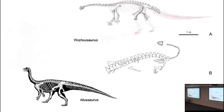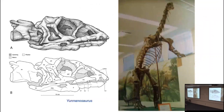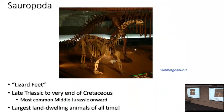Other near-sauropods include Mussaurus — I showed some of the growth cycle earlier — Inyosaurus, and Yunnanosaurus from China. Out of this radiation we actually get true sauropoda. The name sauropoda means 'lizard feet' or 'lizard-footed ones,' even though their feet are utterly unlike lizards.